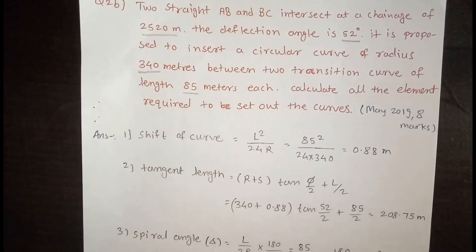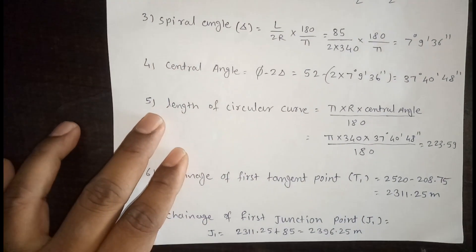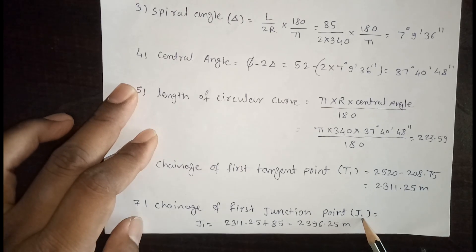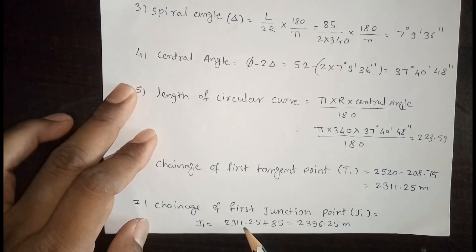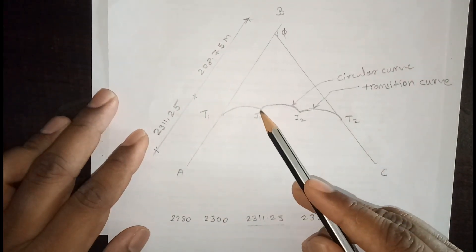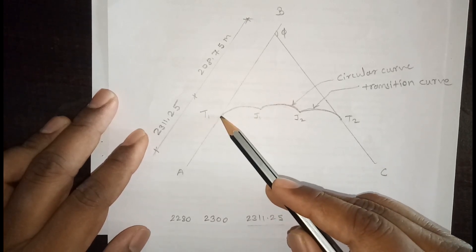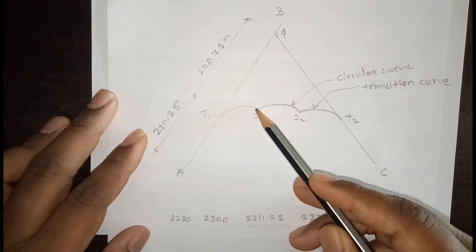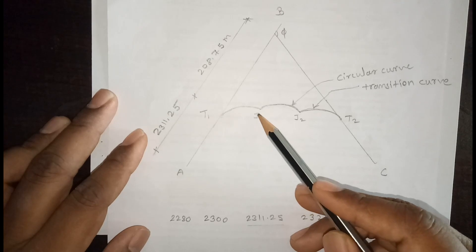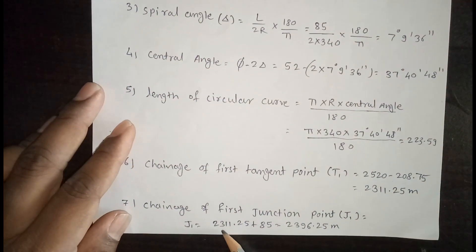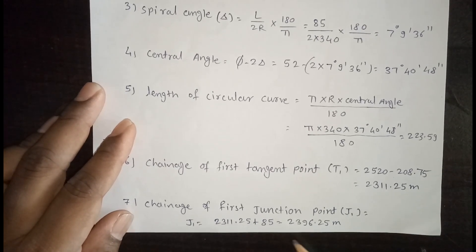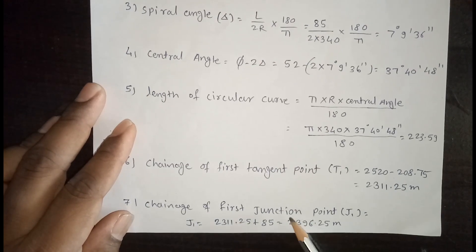Now calculate the chainage of the first junction point J1. The chainage of J1 = chainage of T1 + length of transition curve. So: 2311.25 + 85 = 2396.25 meters. The chainage of the first junction point J1 is 2396.25 meters.